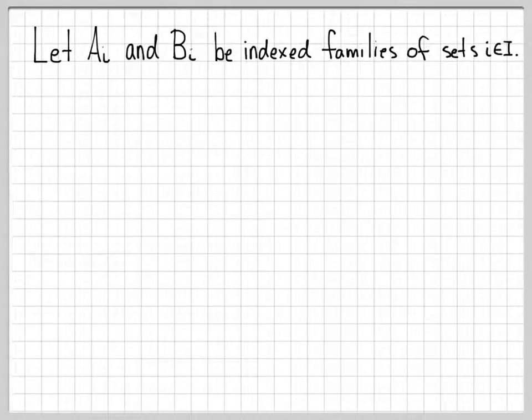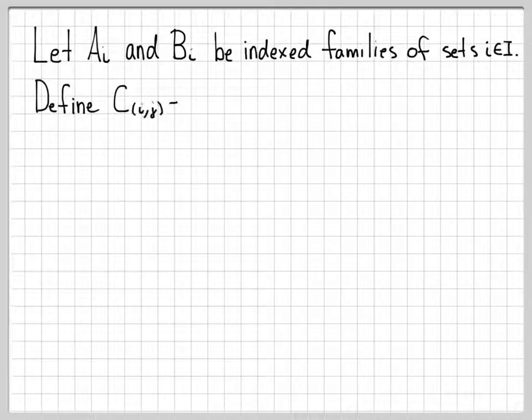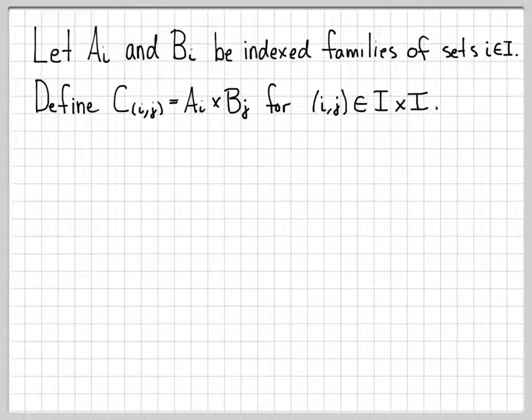In this problem, we're working with a_i and b_i. These are just indexed families of sets, where the little i is an element of the set capital I. We're going to find another set, c sub i comma j, which is the Cartesian product of set a_i with b_j. We can create this set c_{i,j} as this cross product for every single element in the Cartesian product of I with I.